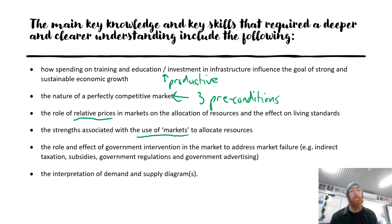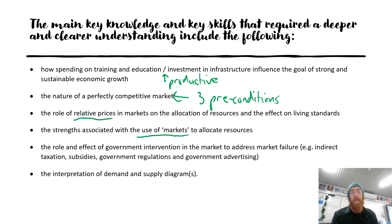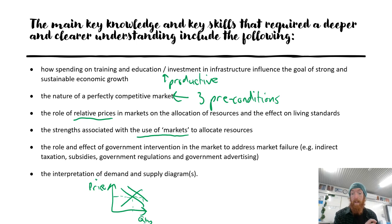Markets also keep costs low because competition forces businesses to cost-cut to remain competitive, and keeps prices low for consumers, maximising living standards. The effect of government intervention in a market to address market failure — including indirect taxation, subsidies, government regulation, and government advertising — and the interpretation of demand and supply diagrams is very important. When a shift in demand occurs, at first there's just more demanded at the same price, creating a shortage, and then consumers bid up prices until a new equilibrium forms. Being able to describe that shortage or surplus occurring first is where many students lose marks.